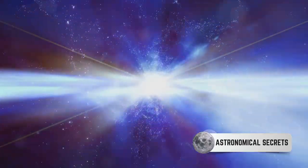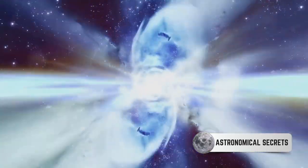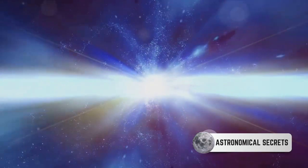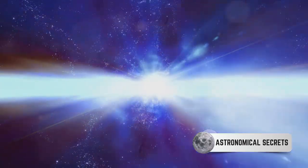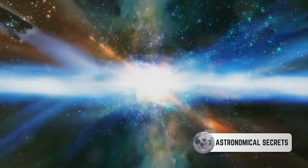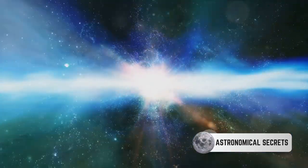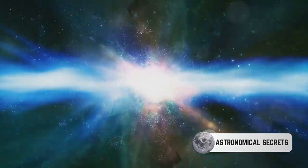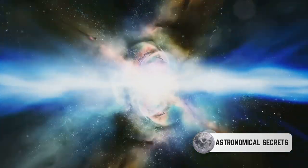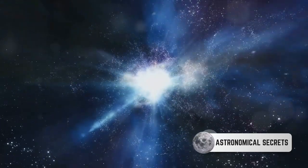But how exactly do supernovae tell us about the expansion of the universe? Well, it all comes down to the light they emit. The light from distant supernovae appears less bright than we'd expect given their standard brightness. This dimming is due to the expansion of the universe. As the universe expands, it stretches the light waves from the supernovae, shifting them towards the red end of the light spectrum.